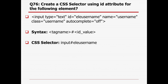Create a CSS selector using the ID attribute for the given element, where input text, ID, name, and class name are present. The syntax for creating a CSS selector using ID is: tag name, then hash, then ID value. Here, tag name is 'input', hash, and ID is 'element_username'. That is the syntax for creating a CSS selector using ID only.